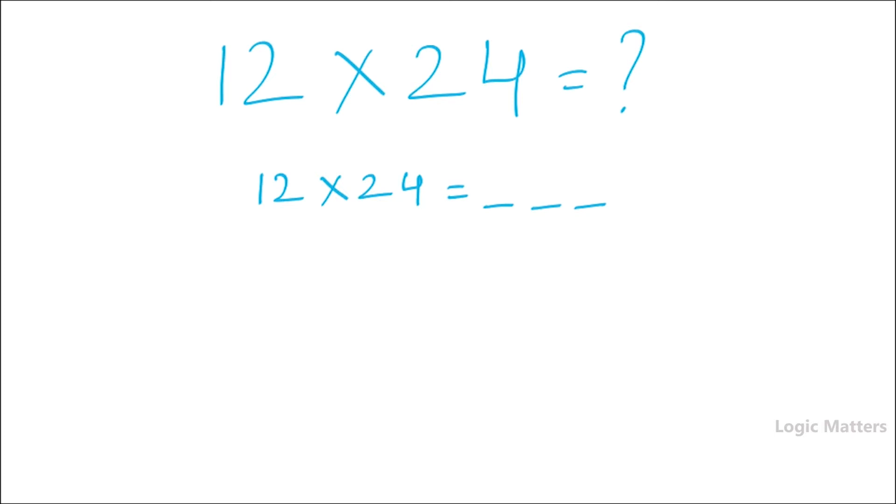So what we need to do is first digit of first number should be multiplied with first digit of the second number. So 2 times 1 is 2. Write 2 in this position.